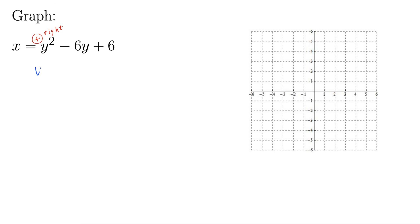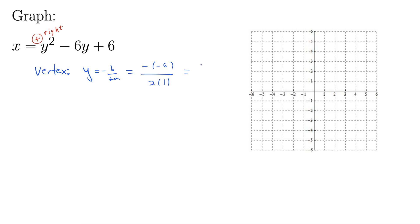Next, let's get the vertex. We have our vertex formula, and now instead of x equals negative b over 2a like it was in the vertical parabola case, this time we have y equals negative b over 2a. So that gives us negative negative 6, all over 2 times a, which is 1. So that is 3.